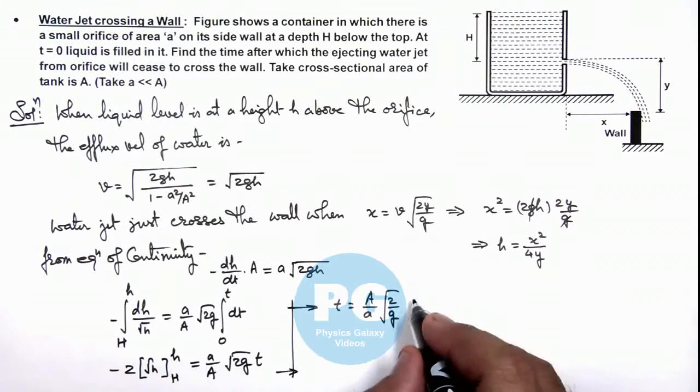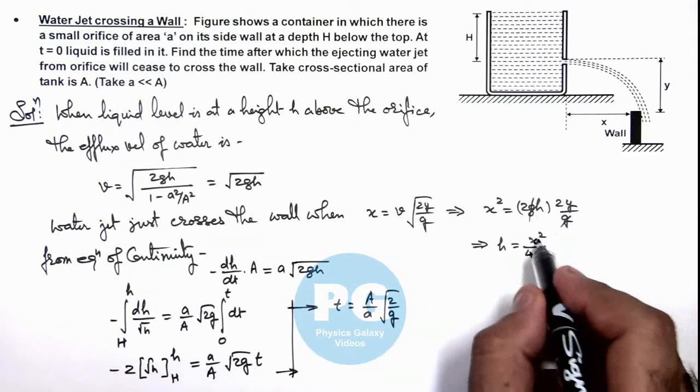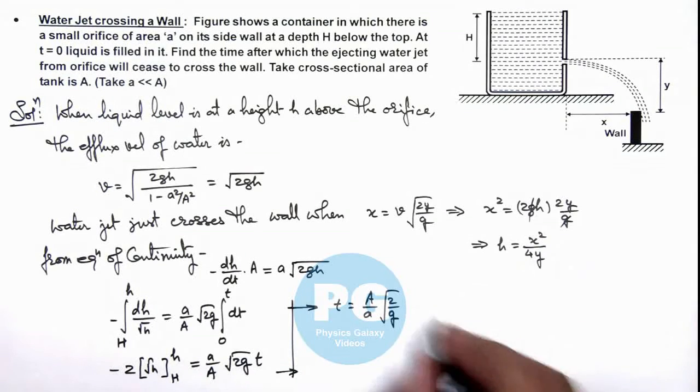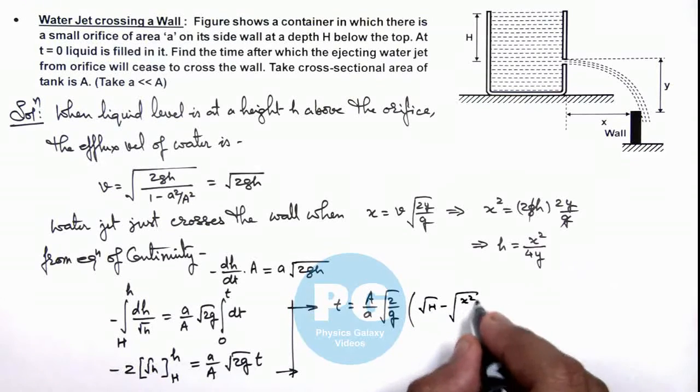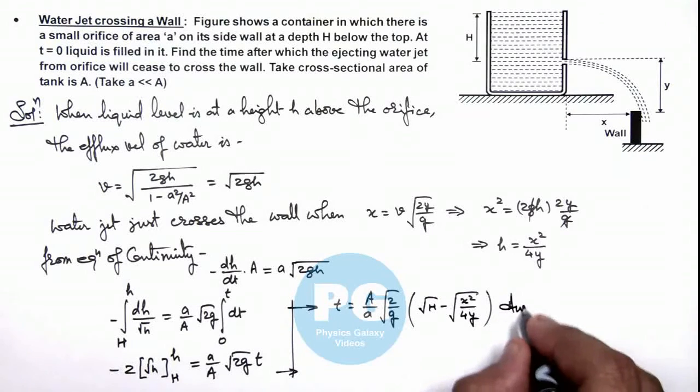And here value of small h we can substitute as x²/4y. So this will be root(H) minus root(x²/4y). That is the result of this problem.